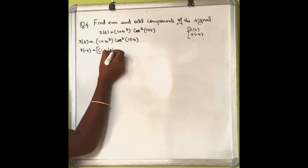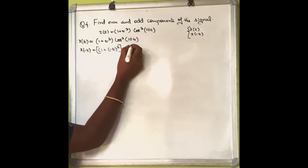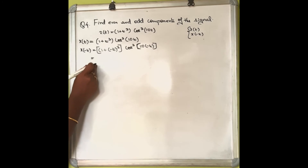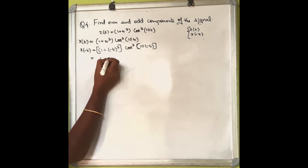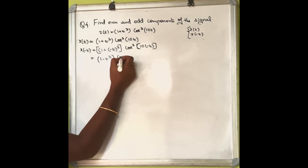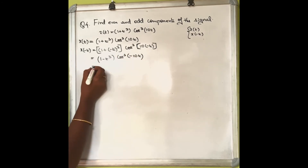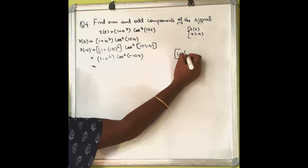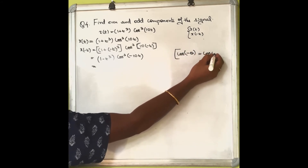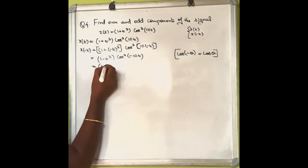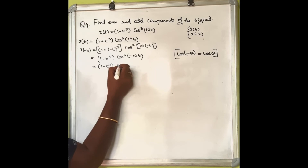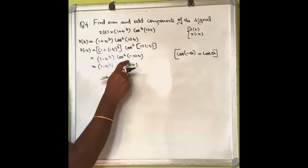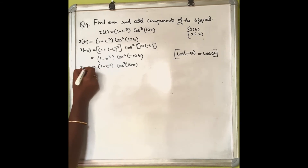Replacing t with -t gives 1 + (-t)³cos³(10·(-t)), which simplifies to 1 - t³cos³(-10t). Since cos(-θ) = cos(θ), this becomes 1 - t³cos³(10t). This is x(-t).